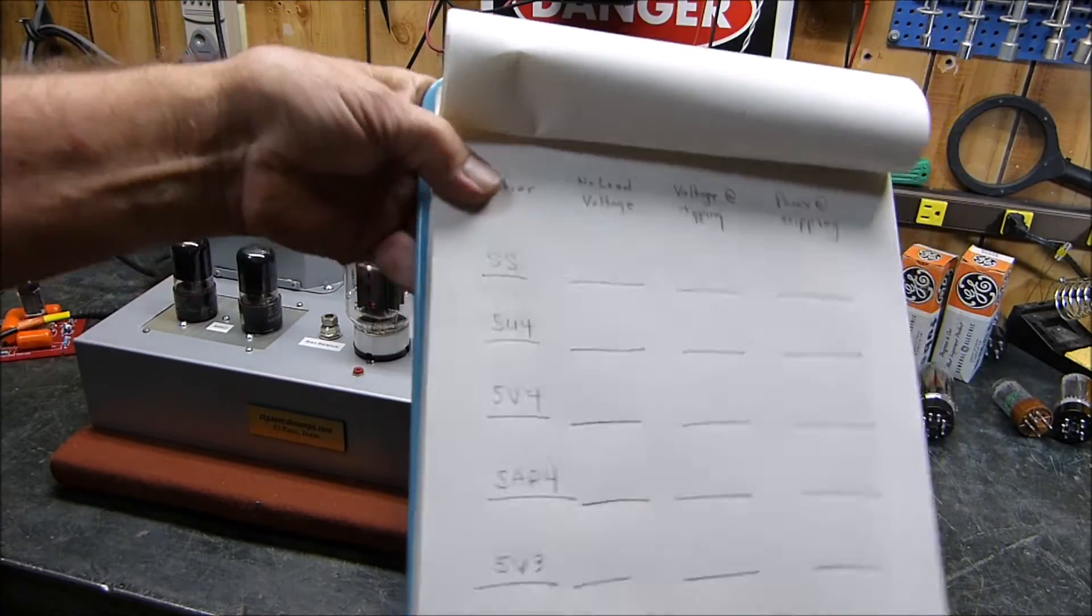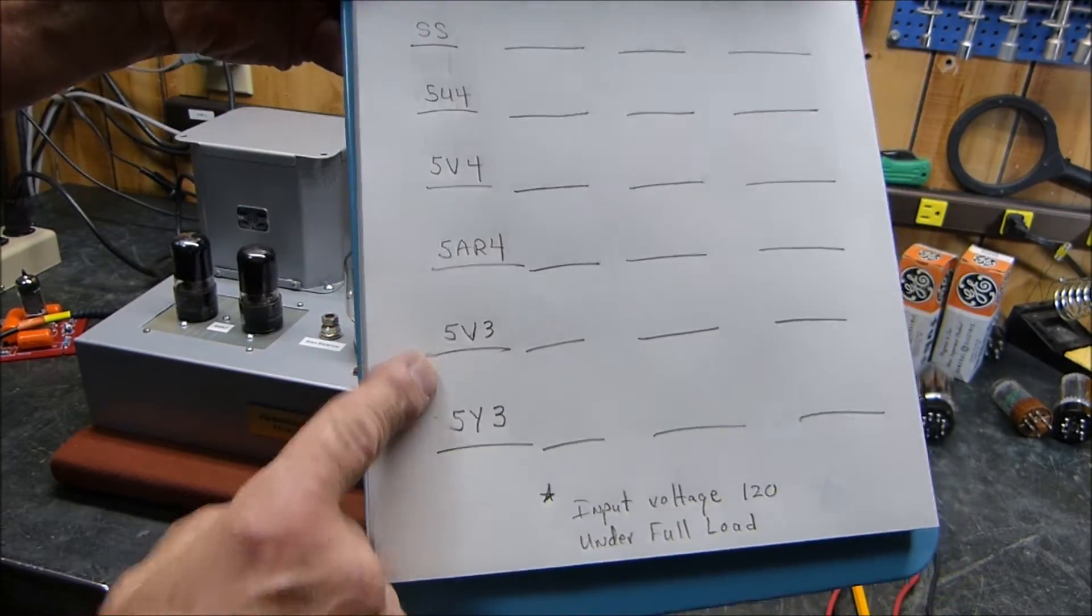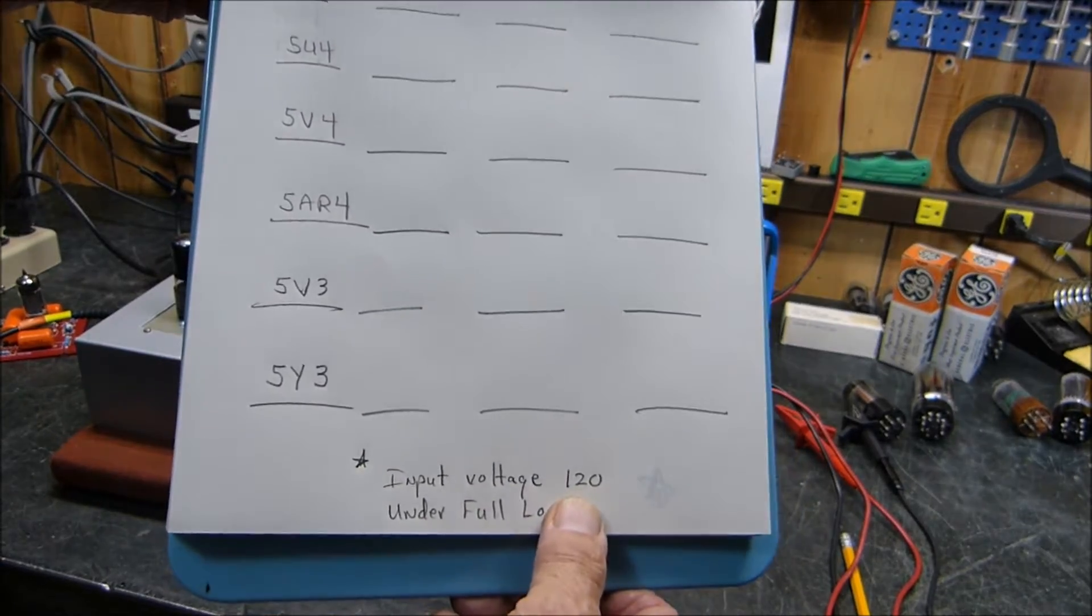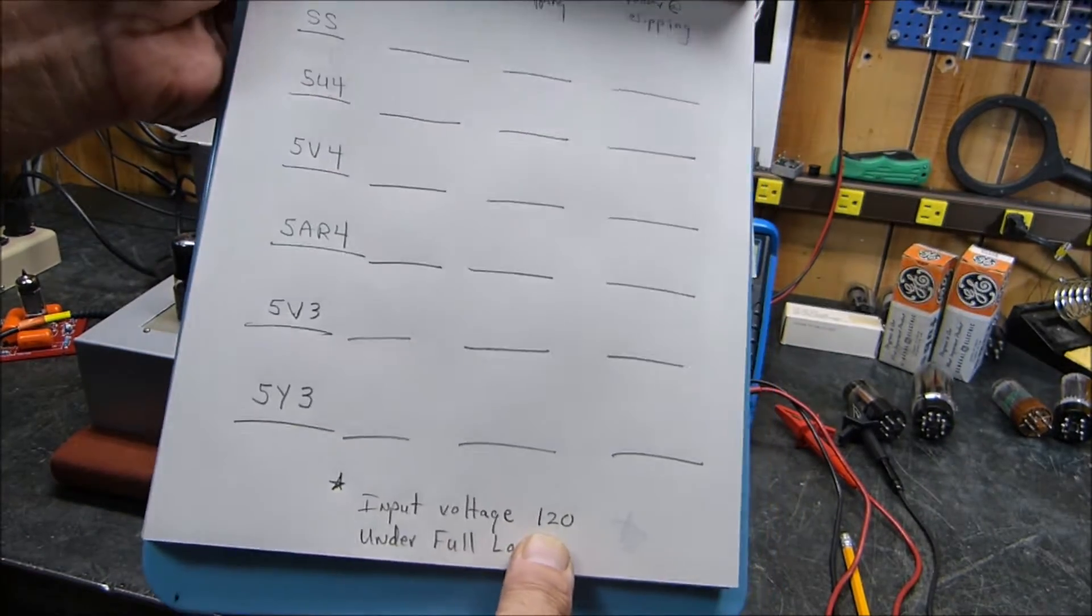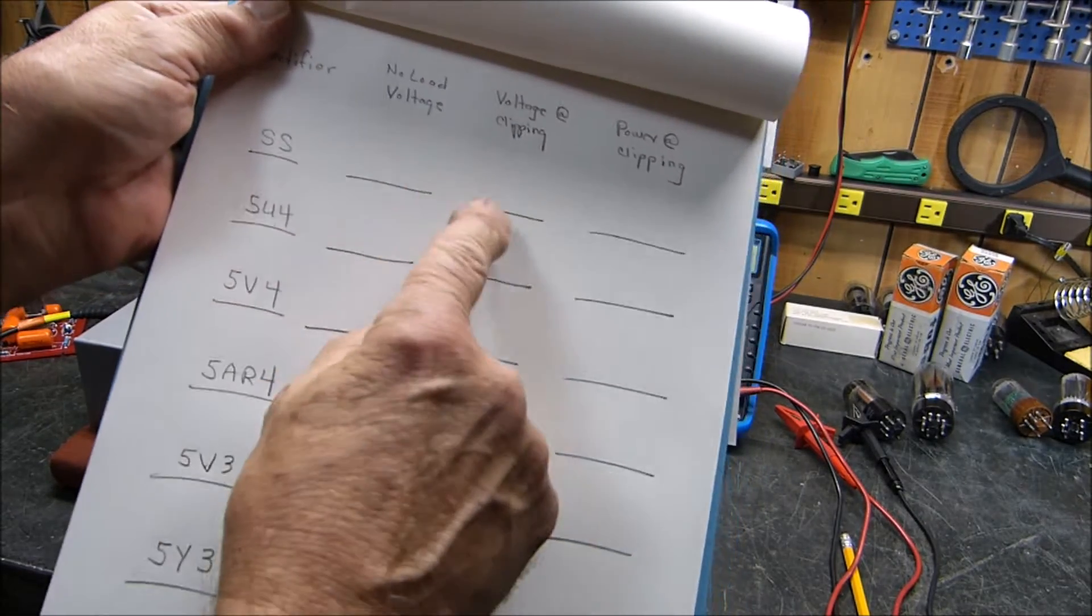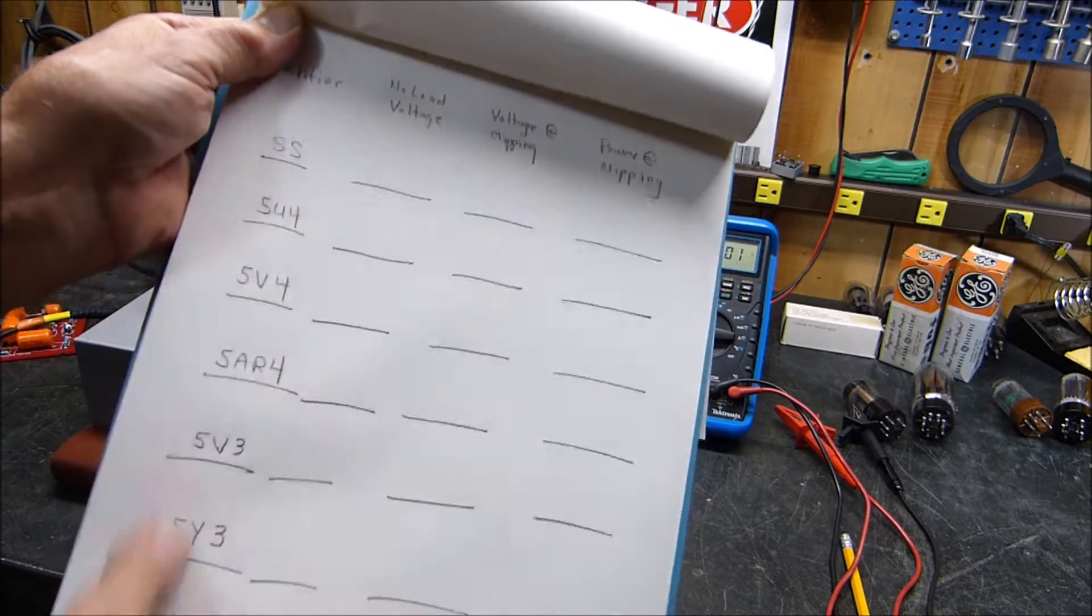What we're going to do is measure these things under really full load. I've got the rectifier solid state, 5U4, 5V4, 5AR4, 5V3, and the 5Y3. I'm going to always maintain the input voltage at 120 volts AC. I'm going to measure the voltage at no load, the voltage at clipping, and the power output in each one. I think it's going to be really interesting.